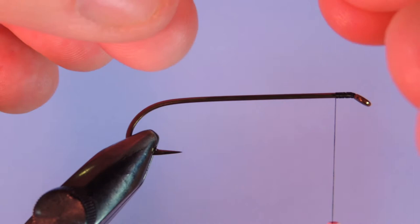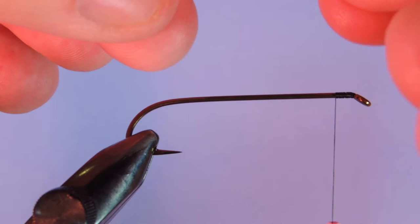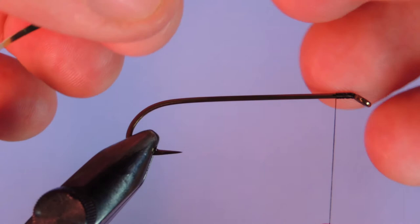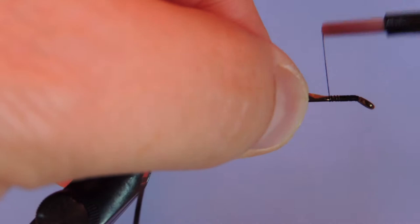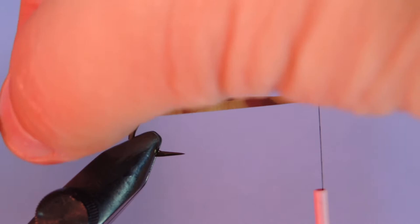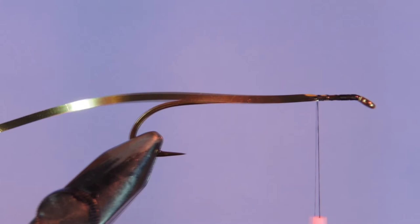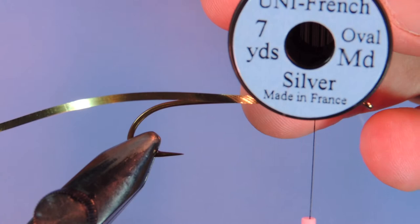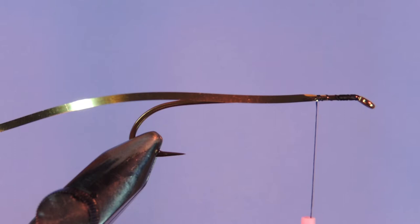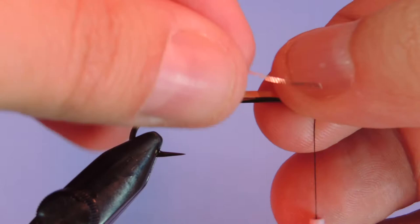We're going to need some silver tinsel. This is a uni silver gold tinsel. I'm tying this with the gold side facing out. Set that in the hook clip material clip. Next we're going to use a little bit of silver uni French oval tinsel. This is a size medium. I like to use a bit of a larger size just so that it shows up on the pattern a little better.